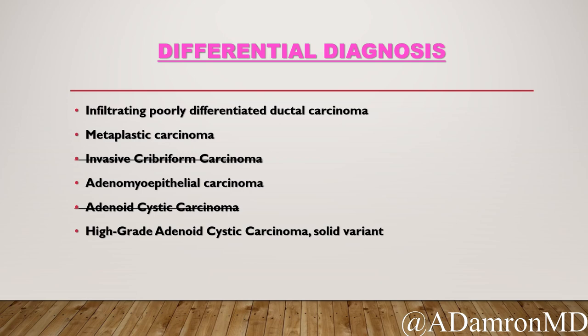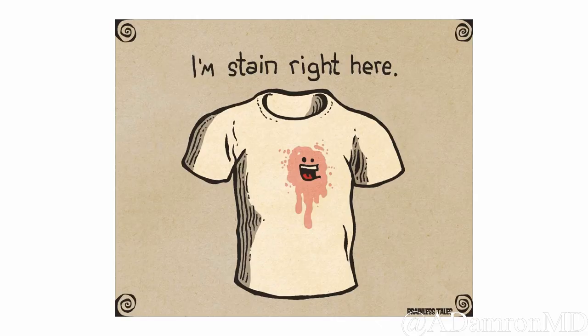A couple of things we can cross off: invasive cribriform carcinoma - this is too high grade. Cribriform carcinoma looks very different: very low grade, invades through the breast with very little stromal reaction, often associated with tubular carcinoma. Classic adenoid cystic carcinoma is also too high grade given this infiltrative pattern and high mitotic activity. That still leaves us with the higher-grade differentials: adenomyoepithelial carcinoma, high-grade ACC solid or basaloid variant, metaplastic carcinoma, or just IDC NOS.